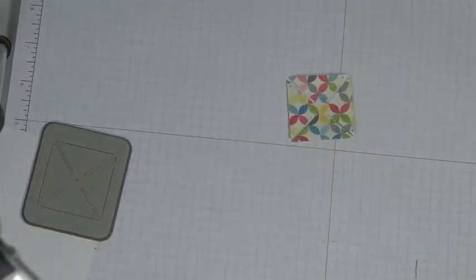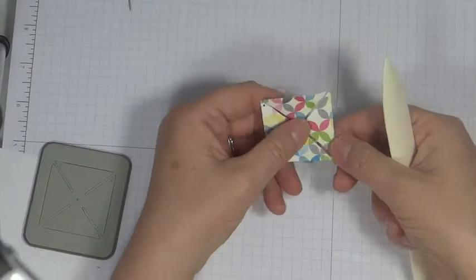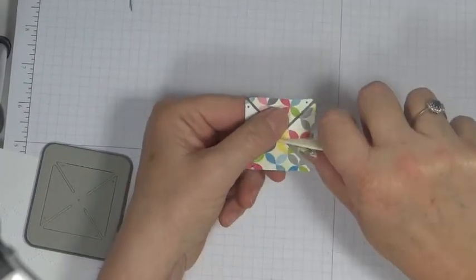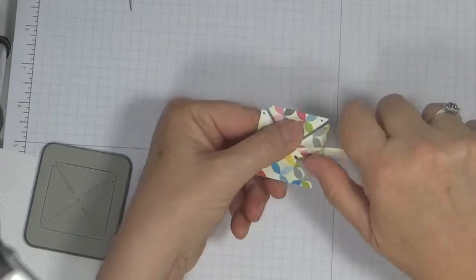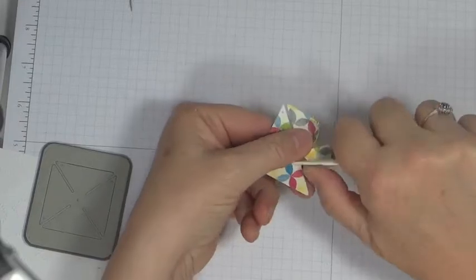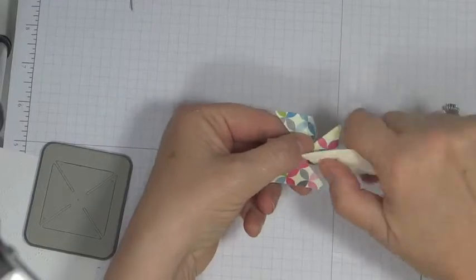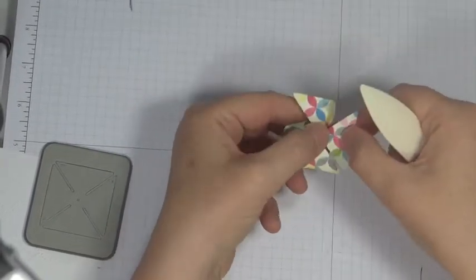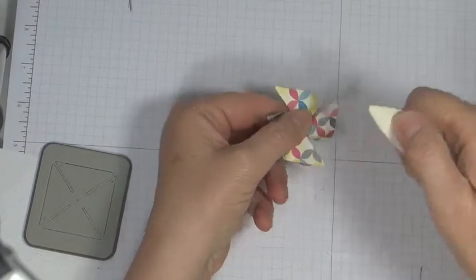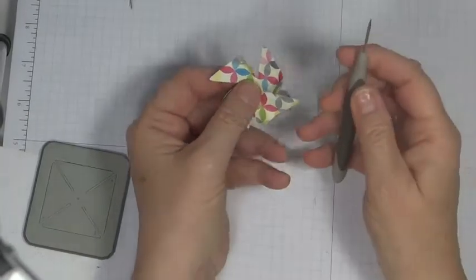Once you've got that done the easiest way I've found to do this is on the side where you've got your little opening take your bone folder and just gently get this curving up. So you want to do that to all four sides.